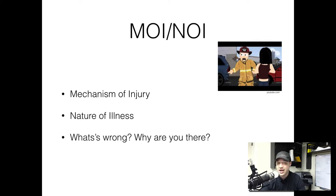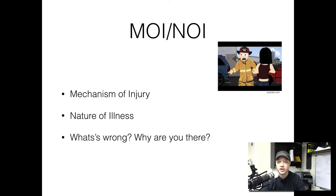We then move on to establishing the mechanism of injury or the nature of illness. You want to figure out what's wrong with the patient and why you're there. A mechanism of injury may be a motor vehicle crash or a fall from a height. The nature of illness might be what's actually wrong with the patient — someone experiencing chest pain or difficulty breathing. Those will be your nature of illnesses.